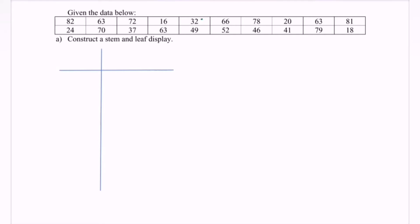Kindly refer to the data. We have 82 as the highest value and 16 as the lowest value. Now what we have to do is to construct the stem-and-leaf display. Step number one: separate each score into two parts, namely the stem and the leaf.